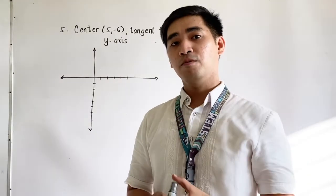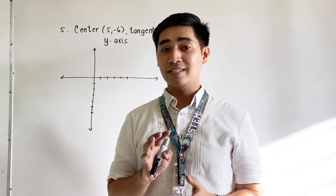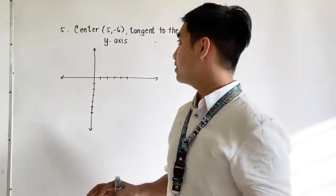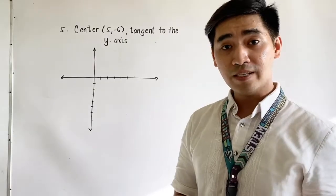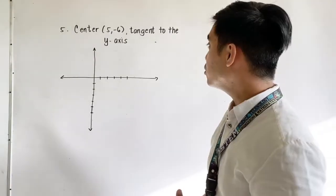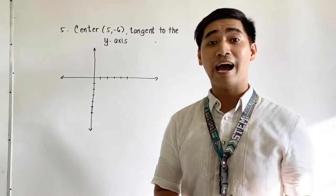For our next example, we are given the center located at 5 and negative 6, and it is tangent to the y-axis.